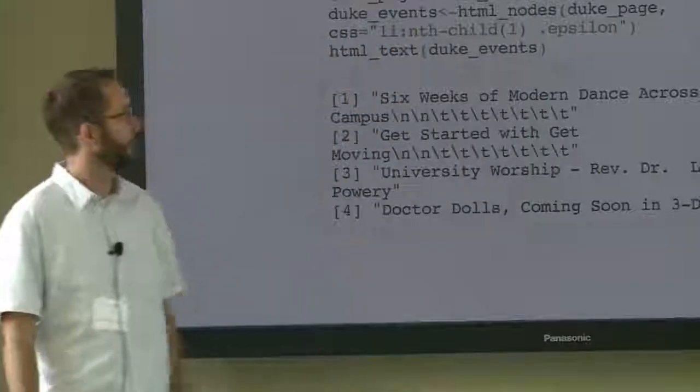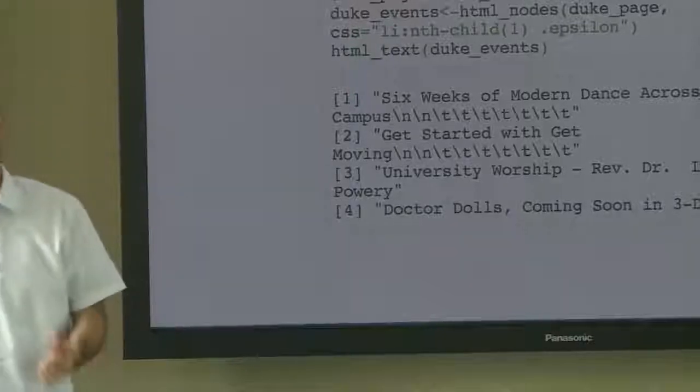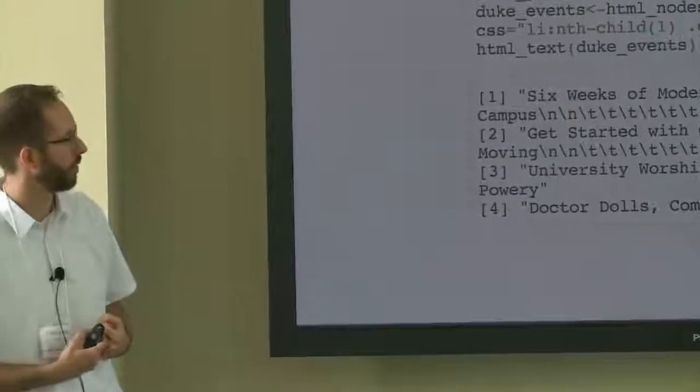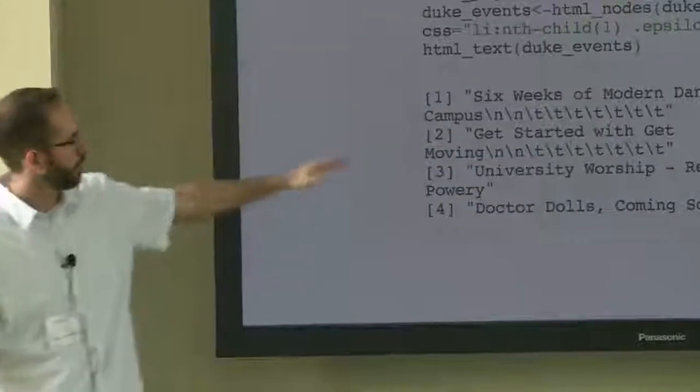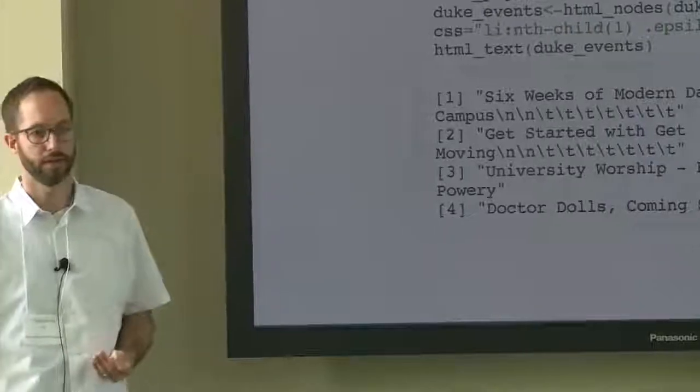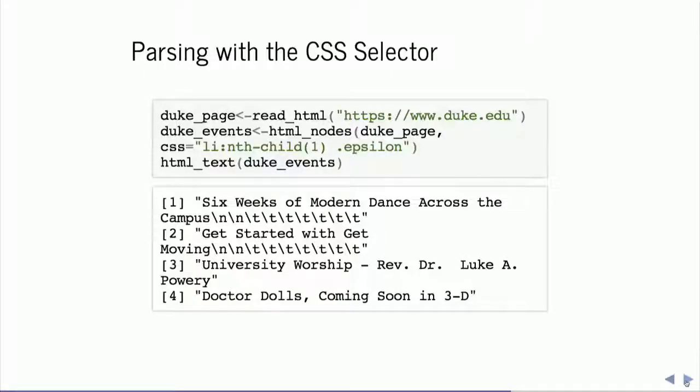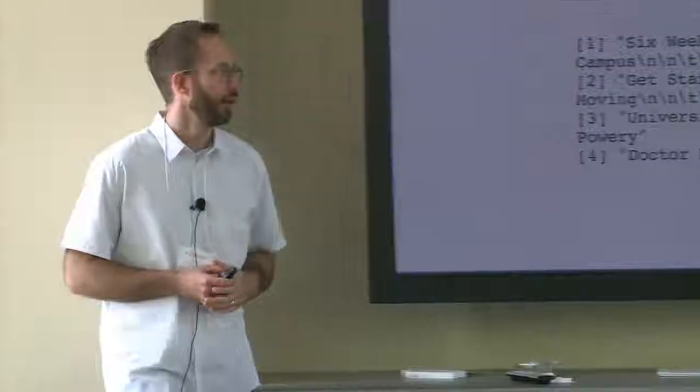Once we've identified the CSS selector, the process is very similar to before: read in the web page using read_html, then use the html_nodes function passing the CSS selector instead of the XPath, creating a new object called 'duke_events'. This time since the data isn't in table format, we use the html_text function. When we browse the output, we've got the names of the events — though you'll get different events now since the page has changed. You'll also see residual HTML tags like '\n' and '\t' — those tell the browser to start a new line or add a space — which we'll clean up tomorrow in our basic text analysis section.